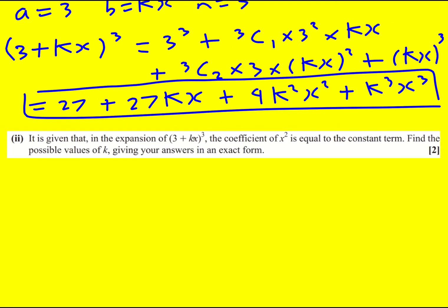It's given that in this expansion, the coefficient of x squared is equal to the constant term. Find the possible values of k, giving your answers in exact form.